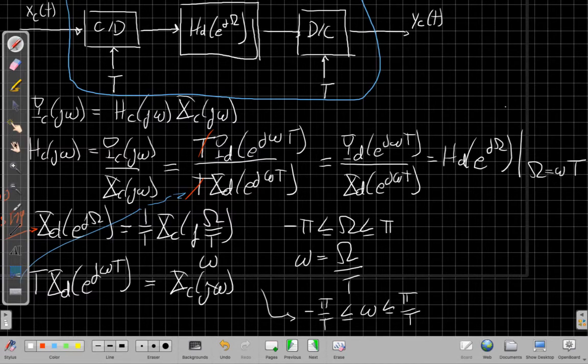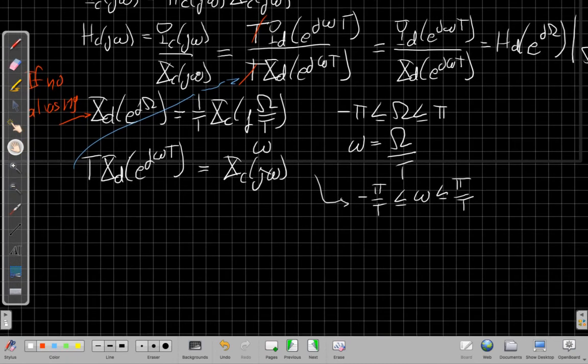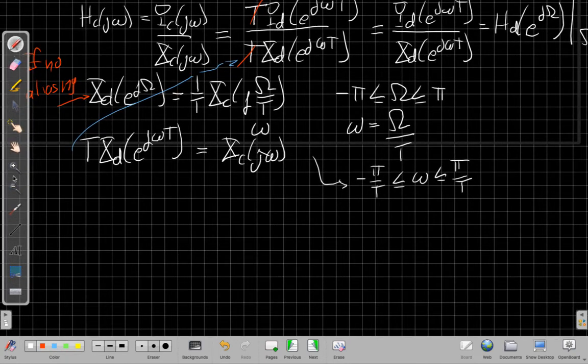In fact, it's a big enough deal I should write it again clearly at the bottom. Just summarizing, the main result of this development is that when I do this sampling, filtering, and then reconstruction or interpolation, the overall system, if there's no aliasing...